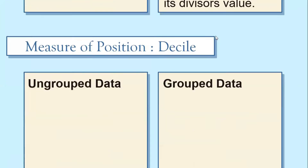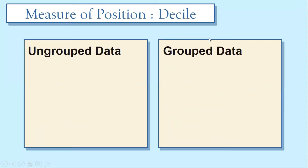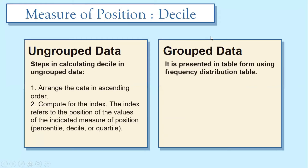Let's have an example of decile under ungrouped data and grouped data. The rules for ungrouped data and grouped data are the same as in percentile. For ungrouped data, we first arrange the data in ascending order, then compute the index for the specific decile. For grouped data, we must complete the frequency distribution table in order to solve the specific decile.